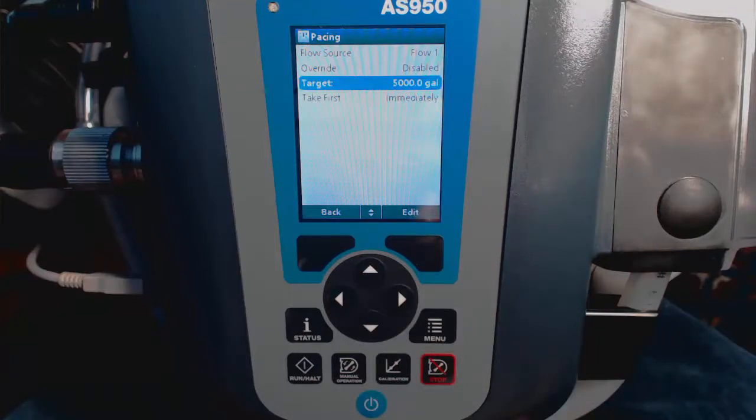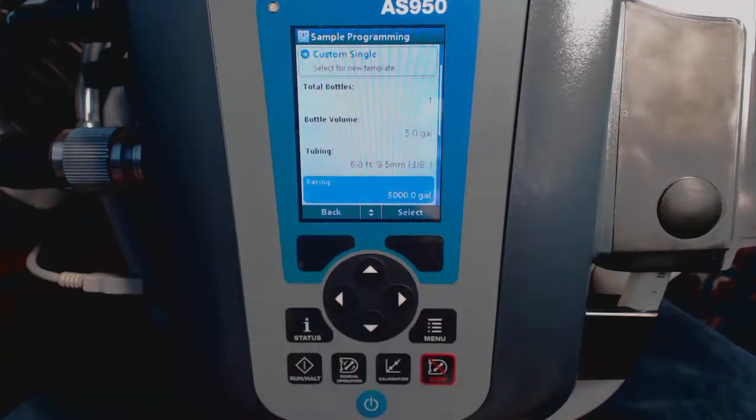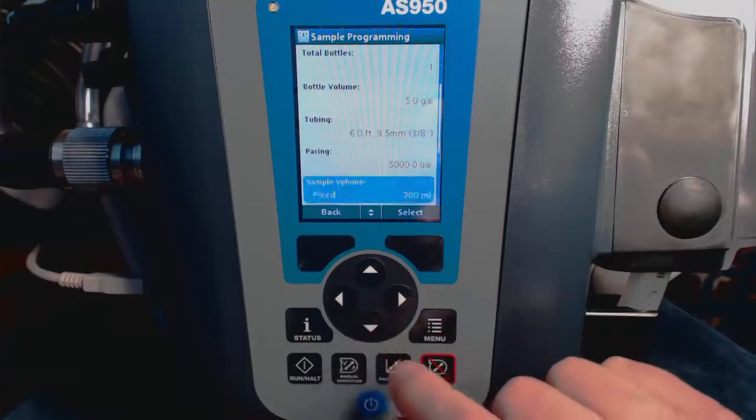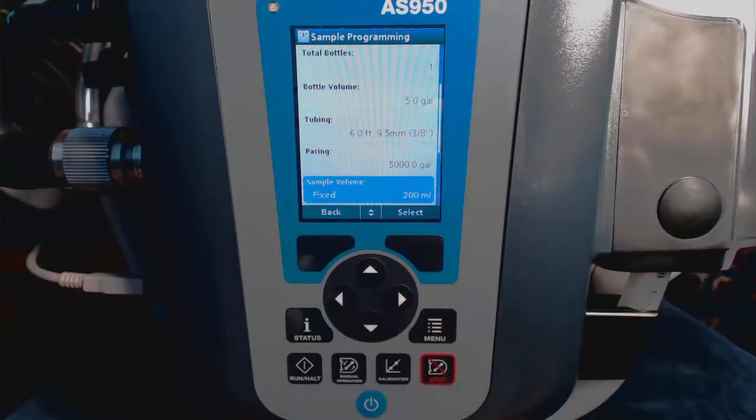Now that we have that entered, we will select back and continue the sampler programming process. Next up is sample volume, and it's at 200 milliliters, and I'll leave that at 200 milliliters.